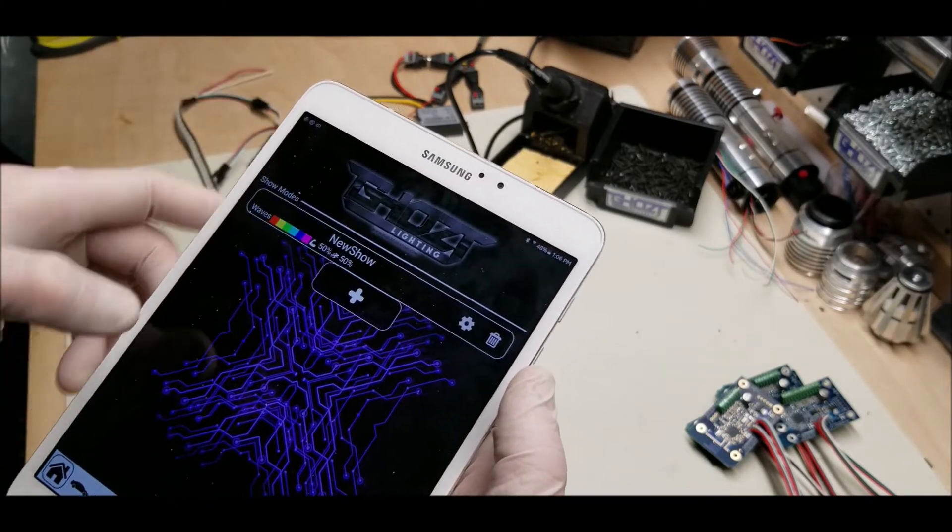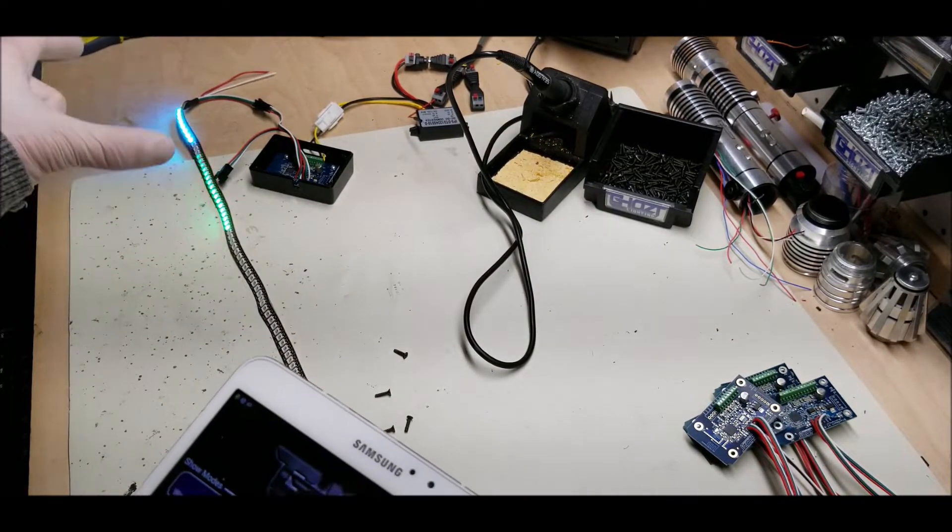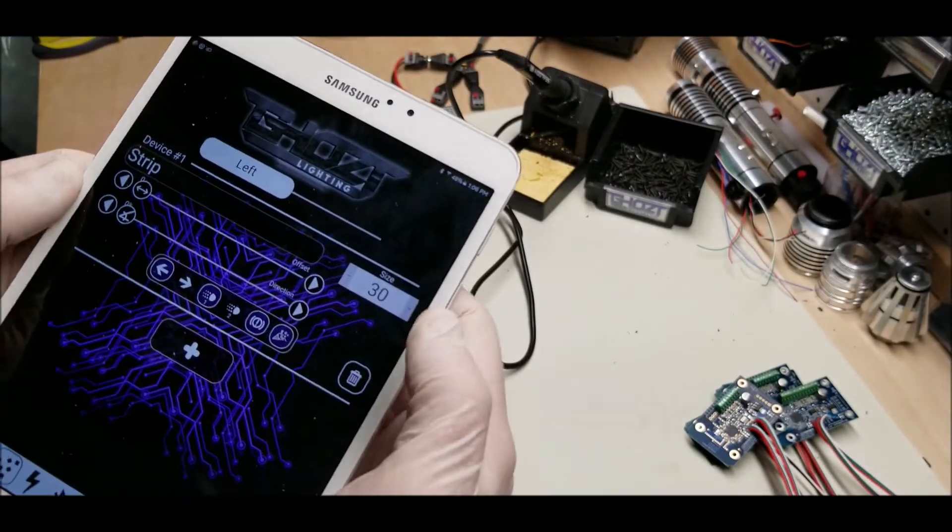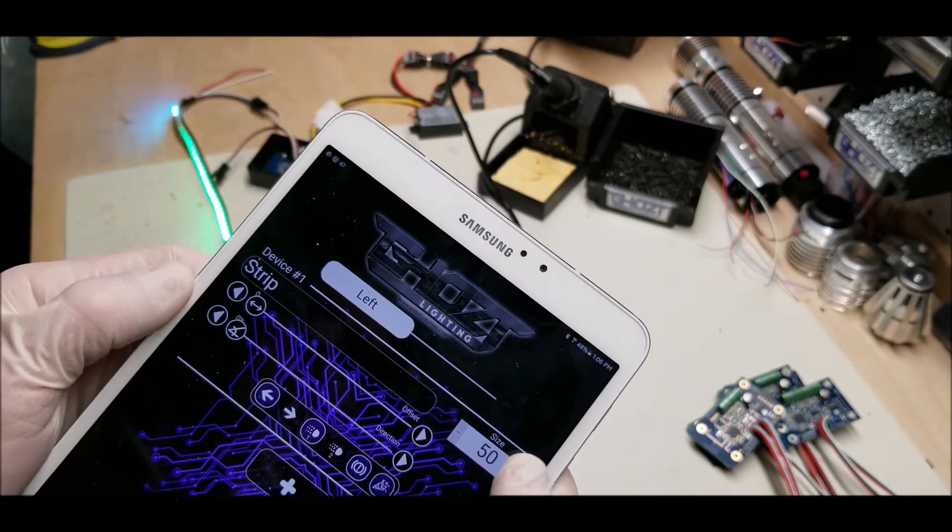What this means is when I go back and enable show mode, it's only running on 30 LEDs because it thinks I only have a 30 LED strip. So I'm going to go back to this and increase the number of LEDs. You see, it's getting longer.